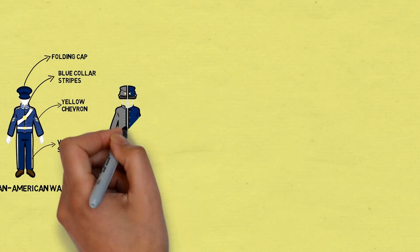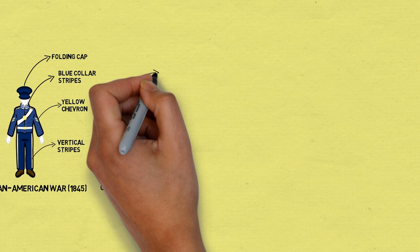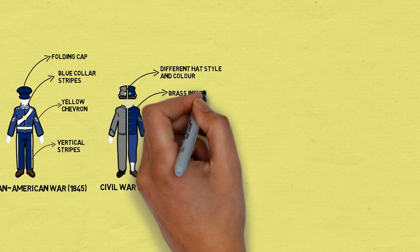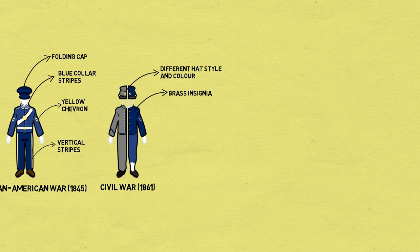Civil War 1861: During the American Civil War, uniforms featured some changes from the previous style. Different hats were put into service and soldiers began fielding brass-colored badges to showcase their units. But due to the nature of the conflict, a wide variety of uniforms were fielded by soldiers.